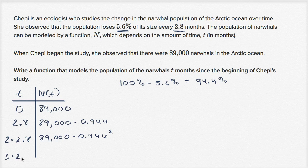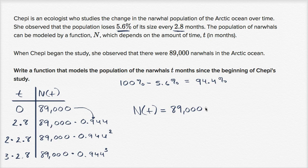And after three of these periods, we're going to be 89,000 times 0.944 squared times 0.944, which is 0.944 to the third power. And I think you might see what's going on here. We have an exponential function. Between every 2.8 months, we are multiplying by this common ratio of 0.944. And so we can write our function, n of t: our initial value is 89,000 times 0.944 to the power of however many of these 2.8 month periods we've gone so far. So if we take the number of months and we divide by 2.8, that's how many 2.8 month periods we have gone.